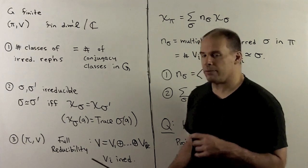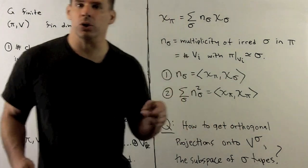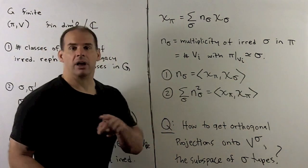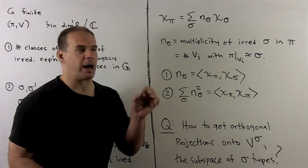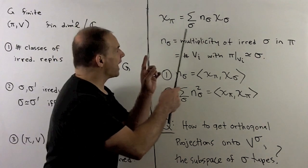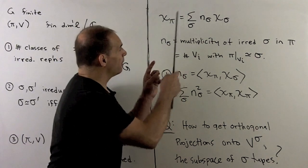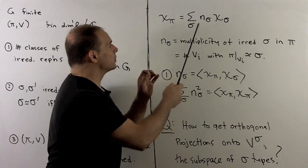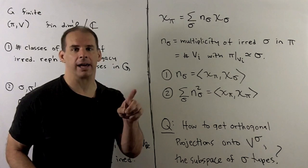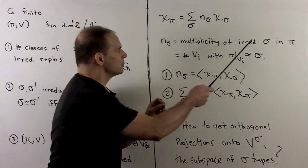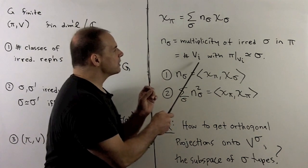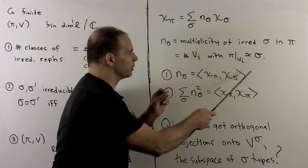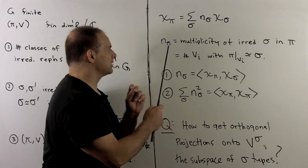We have a rule for counting the number of irreducible types. If we take the trace of pi to get the character of pi, we can write this out as a sum of characters of irreducibles. The coefficient out in front is what we call the multiplicity of the irreducible sigma in pi. This is just the number of V sub i's which have pi restricted to V sub i equivalent to this irreducible sigma. We call that n sub sigma.